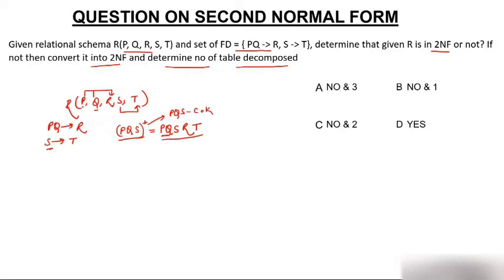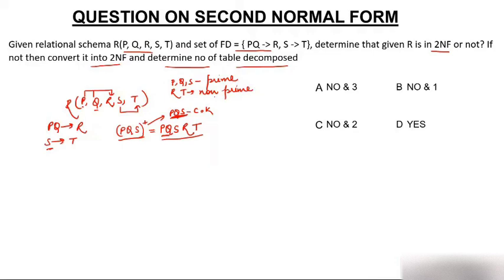PQS is the only candidate key because any superset of this candidate key will be a super key but not a candidate key — candidate key is a minimal super key. In the given table we have only one candidate key: PQS. So the prime attributes are P, Q, S and the non-prime attributes are R and T.